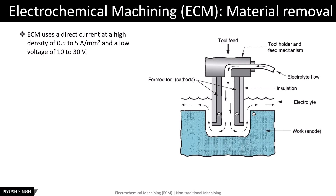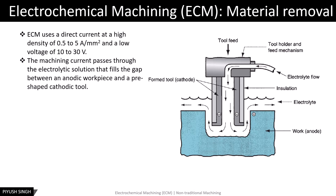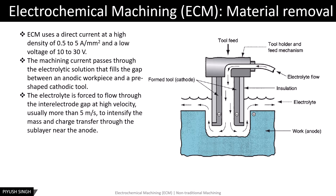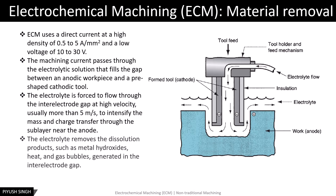Alternating current is not used in ECM. Direct current with low voltage but high current density is employed. The electrolyte, which is forced at high velocity between the electrodes, expedites the mass transfer and also facilitates the removal of reaction by-products and prevents any deposition on the cathode.